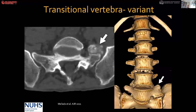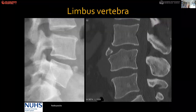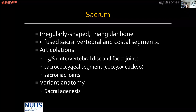Limbus vertebra is not a fracture — it is a developmental anomaly. You can see a piece of bone which is an anterior part of the vertebral body. The sacrum is a triangular-shaped bone, basically five bones joined together. It articulates with the last lumbar vertebra through the L5-S1 intervertebral disc. The coccyx — meaning cuckoo — is named because the shape is like the beak of a cuckoo bird. The sacrum is joined to the pelvis through the sacroiliac joint.